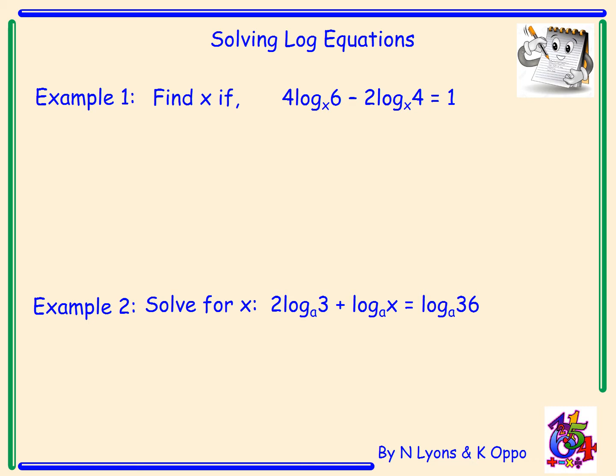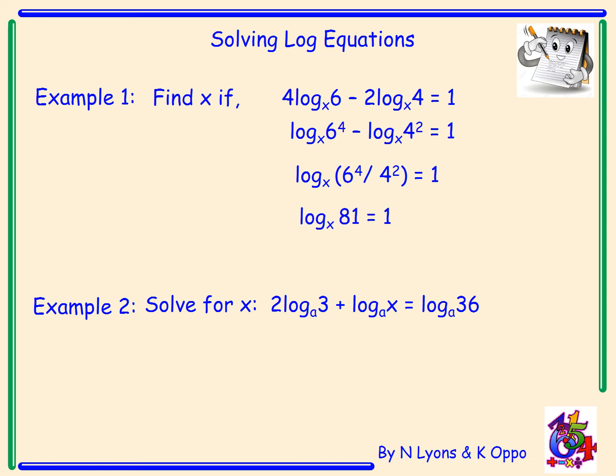From Rule 3, the 4 can go up and become a power, giving us log 6⁴ (base x). Then put the 2 up to become a power, giving minus log 4² (base x) = 1. Now with two log terms being subtracted, we can apply Rule 2 and simplify: log (6⁴ / 4²) (base x) = 1.